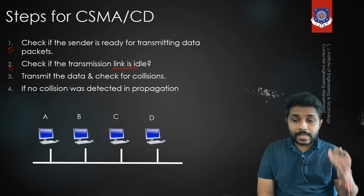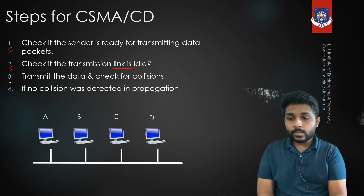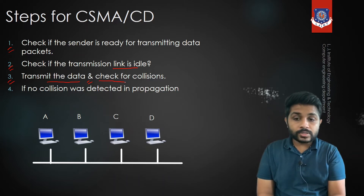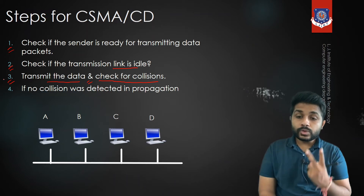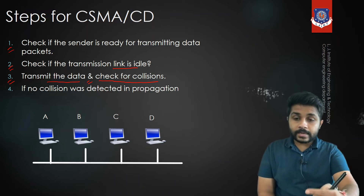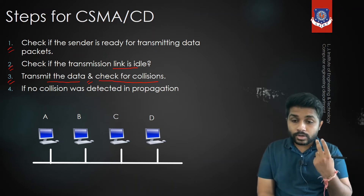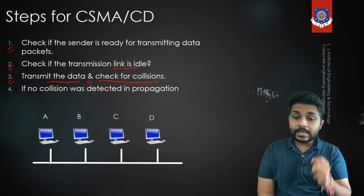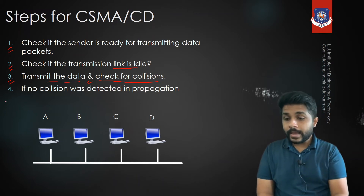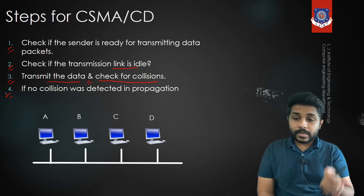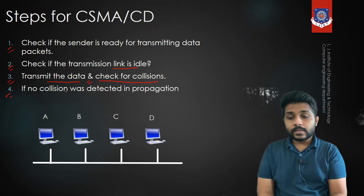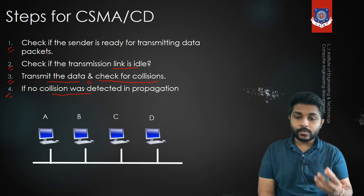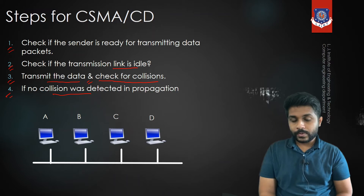If the link is idle and no data transmission is happening, the sender will transmit the data. While transmitting, the sender continuously checks for collision. So in step three the sender is doing two things: sending data and simultaneously checking whether there is a collision. If data is transmitted and no collision is sensed, the communication was successful.